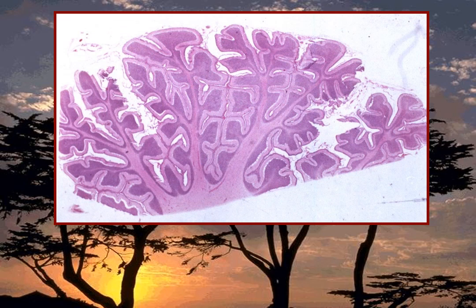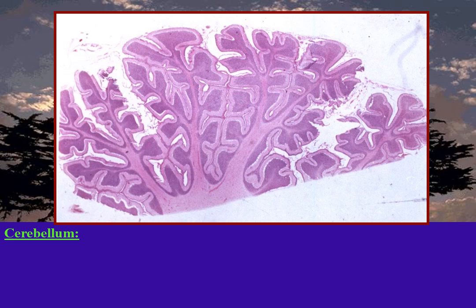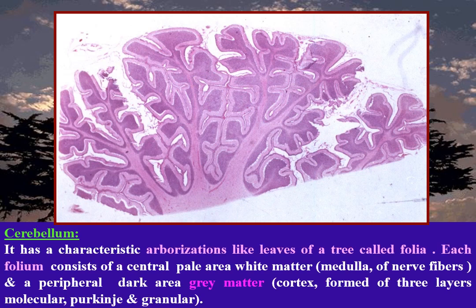Cerebellum — the section is characterized by the presence of arborizations like the leaves of a tree, called folia. Each folium is formed of a central pale area of white matter and a peripheral dark area of gray matter.